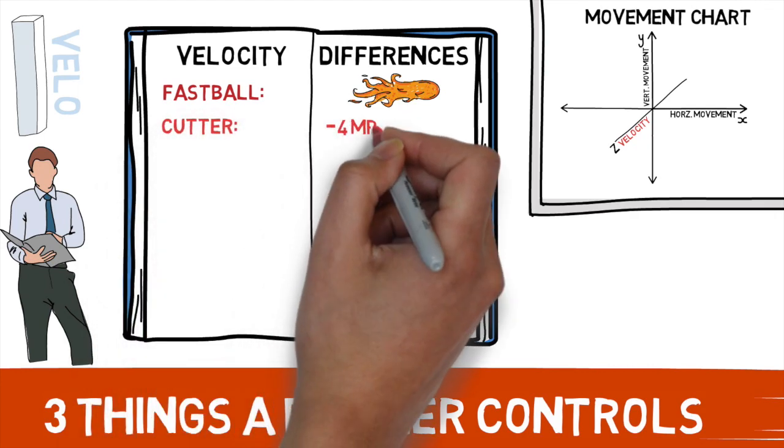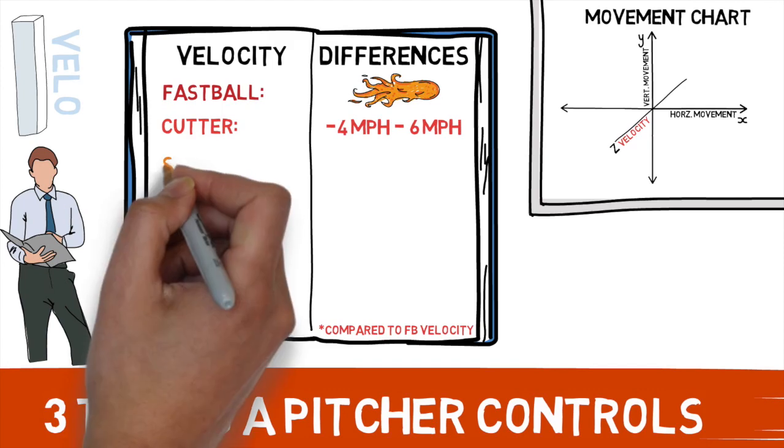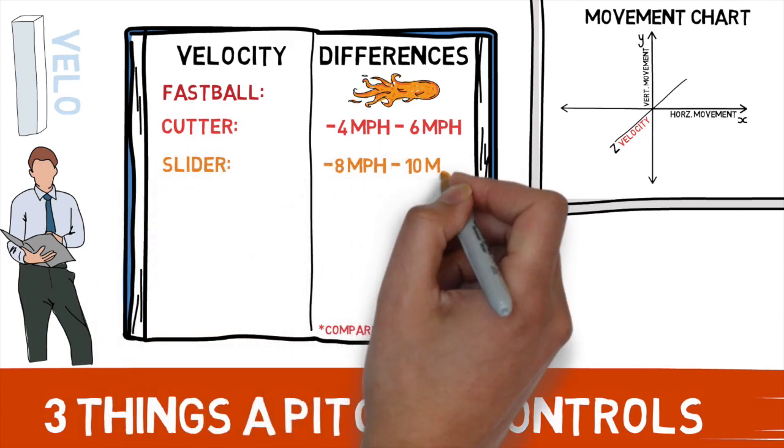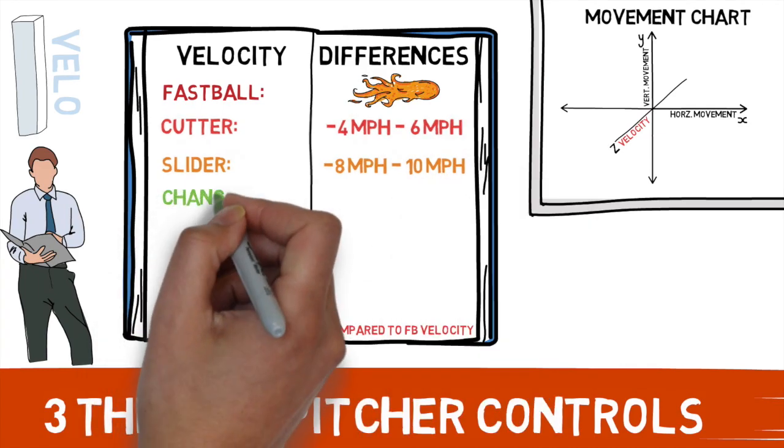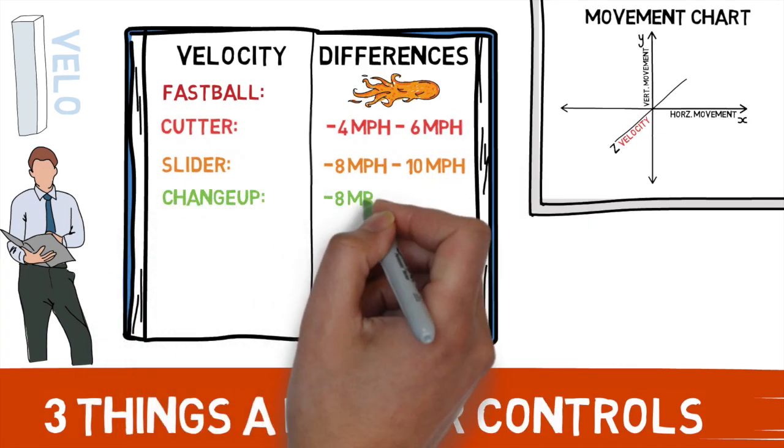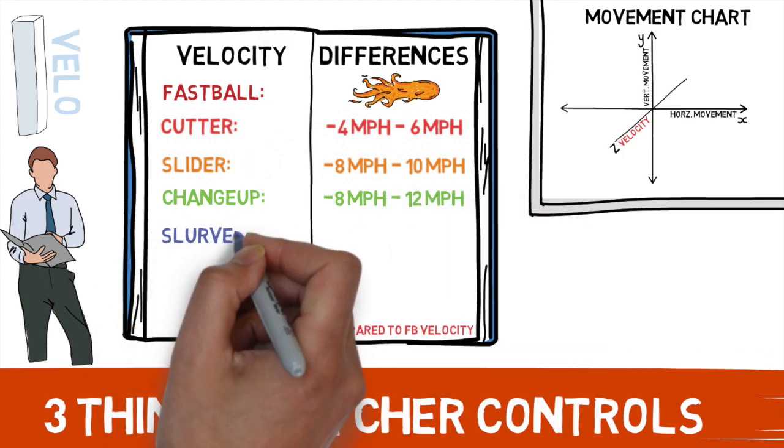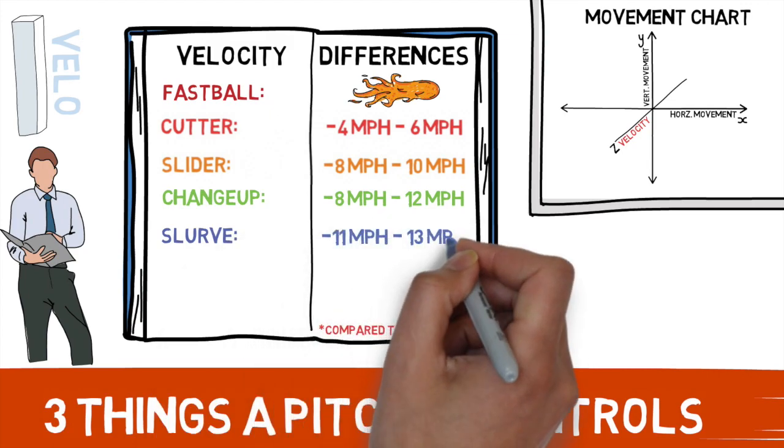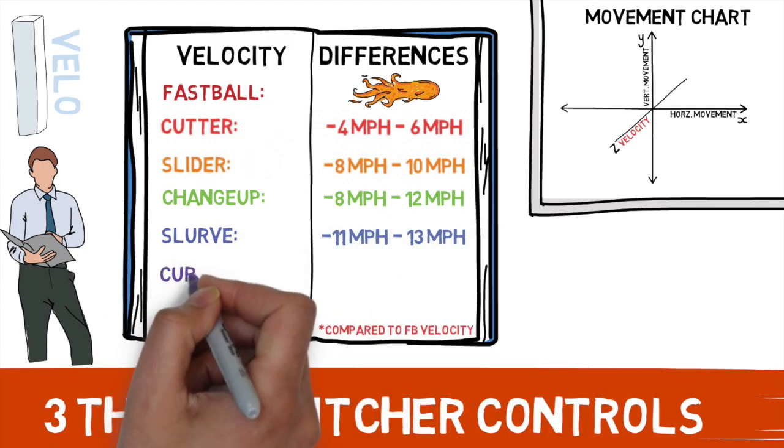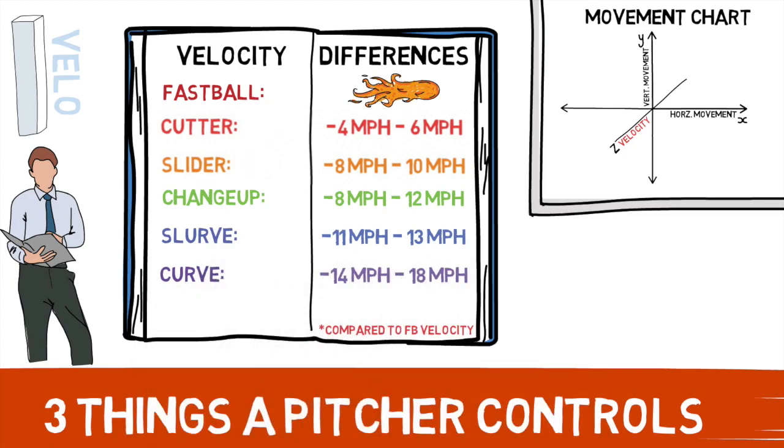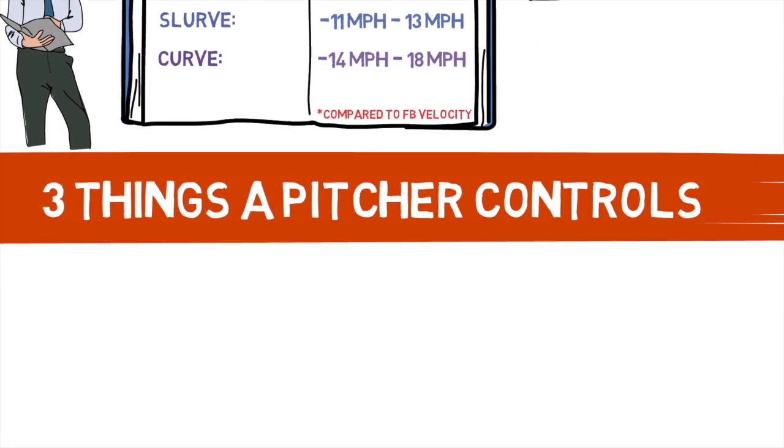In general, your cutters should be thrown four to six miles an hour slower than your fastball. Your slider should be thrown eight to ten miles per hour slower than your fastball. Your changeup, eight to twelve miles per hour slower. Then a slurve should be thrown eleven to thirteen miles per hour slower. And finally, your curveball should be thrown fourteen to eighteen miles per hour slower. Take a look at any successful pitcher's arsenal and check these categories for yourself. For the most part, they'll fall along these lines.